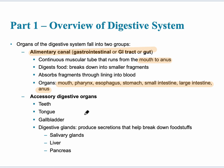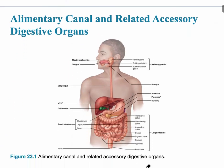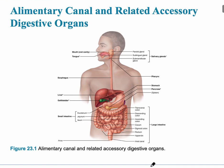Accessory digestive organs are organs that help break down the foodstuffs so that they can be absorbed into the body. Those include the teeth, the tongue, gallbladder, and digestive glands, such as salivary glands, liver, and the pancreas.